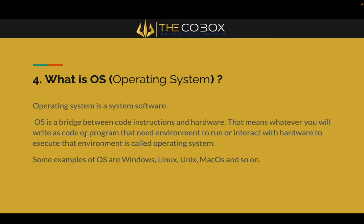Now, what is an operating system? An operating system is a system software — it is itself a big topic, but today we will discuss only the main point: why we use it. An operating system is a bridge between code instructions and hardware. A computer is essentially hardware, and if we want to give any instruction to the hardware, there needs to be an environment that understands our instruction and tells the hardware to perform an execution. Whatever you write as code or a program needs an environment to run and interact with the hardware — that environment is called the operating system.